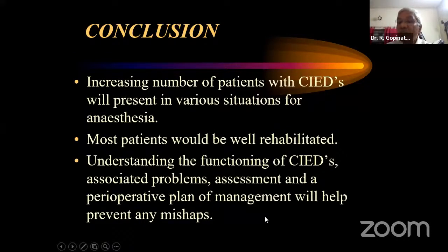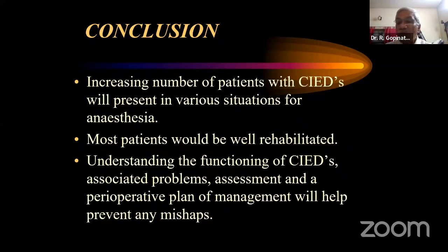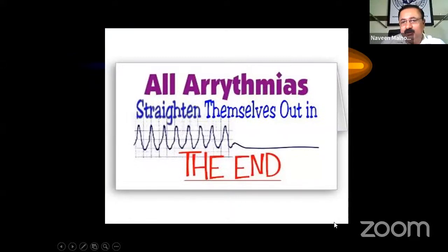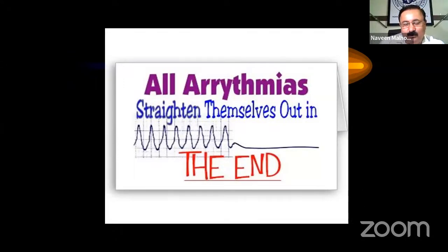Following the lecture, there is a short MCQ exercise. The first question is: The SA node acts as the pacemaker of the heart because it: A) is capable of generating impulses spontaneously; B) has rich sympathetic innervation; C) has poor parasympathetic innervation; D) generates impulses at the highest rate. Participants are asked to type their answers in the chat box.